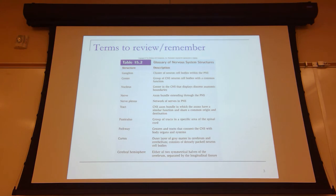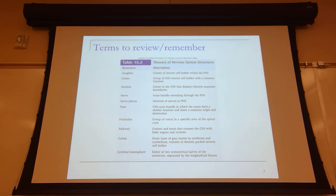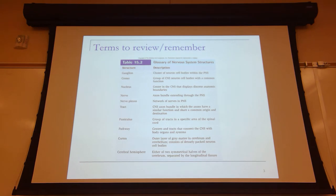We started to learn about terms last week. A ganglion is a collection of cell bodies outside of the central nervous system. You will start to dissect ganglia — Professor Ennis probably won't show you them, but I'm going to show up in lab and make sure you see them. They are tangible structures — you can pick them up with your forceps. These are not all microscopic structures; you can see them. A ganglion is a collection of neuronal cell bodies outside of the CNS. Ganglia is the plural.